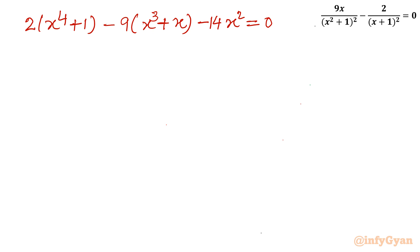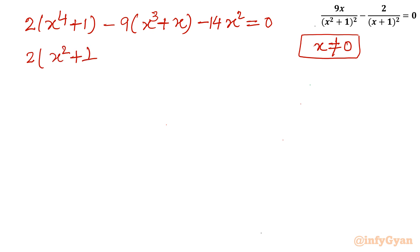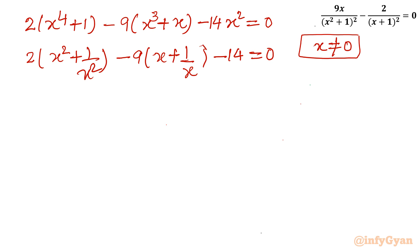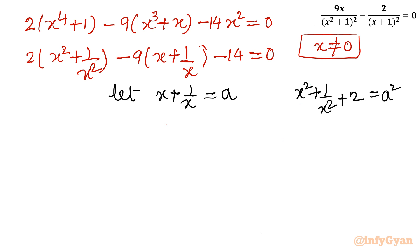I will divide this equation by x², since x cannot equal 0 — if we put x = 0, the first term becomes 0 minus 2 over 1, which is not 0. So dividing by x² gives: 2(x² + 1/x²) minus 9(x + 1/x) minus 14 equal to 0. Now I will consider the substitution x + 1/x = a. Taking the square: x² + 1/x² plus 2 = a², so x² + 1/x² = a² minus 2.